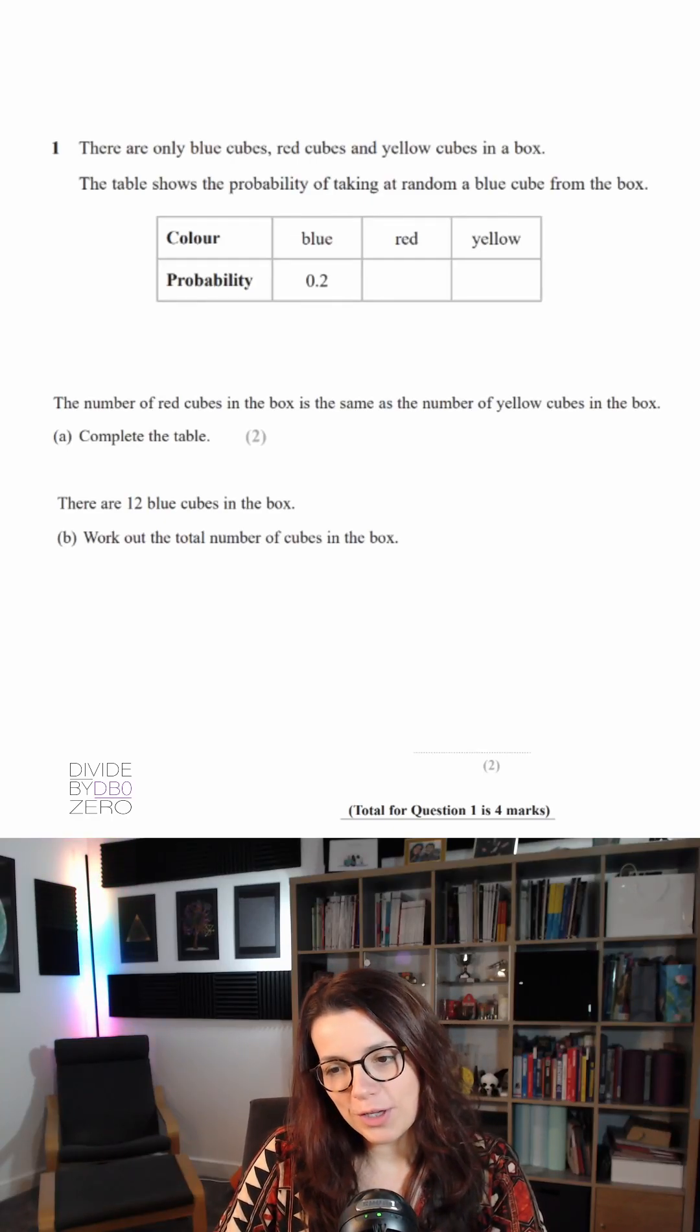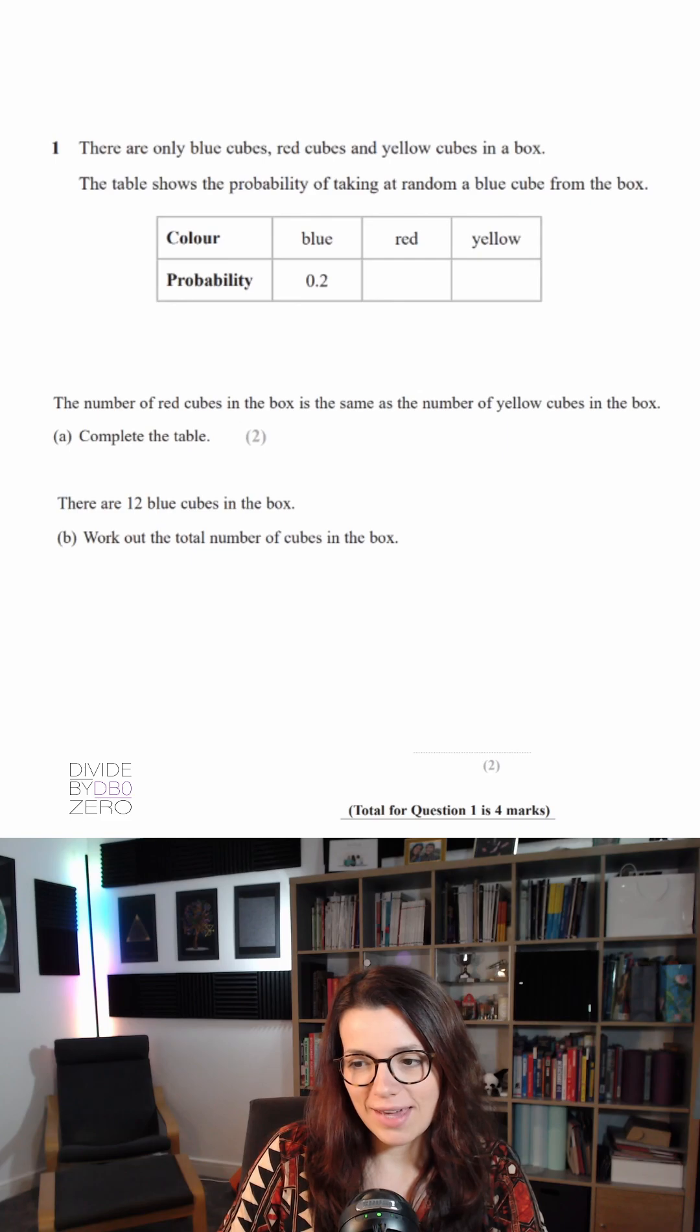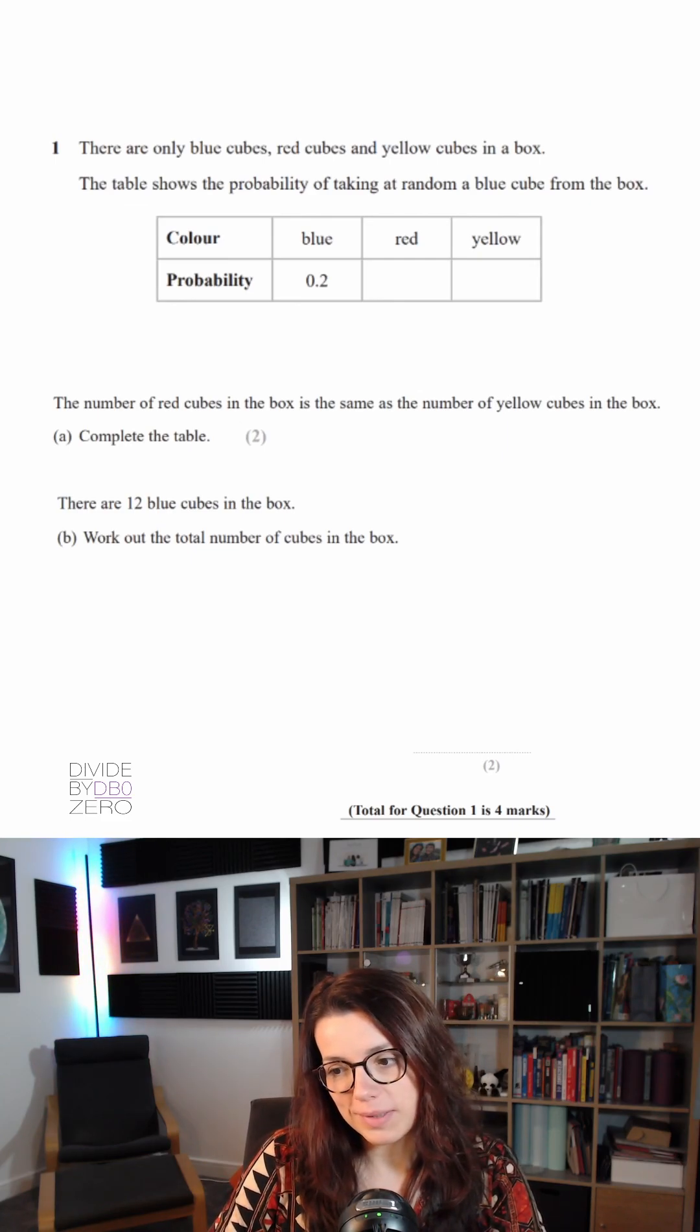GCSE higher question. There are only blue cubes, red cubes, and yellow cubes in a box. The table shows the probability of taking out random blue cube from the box. The number of red cubes in the box is the same as the number of yellow cubes in the box.